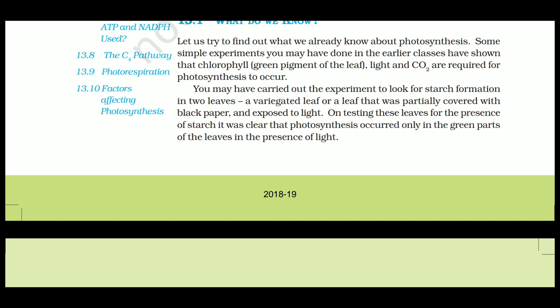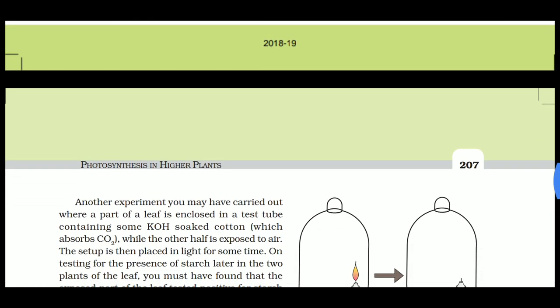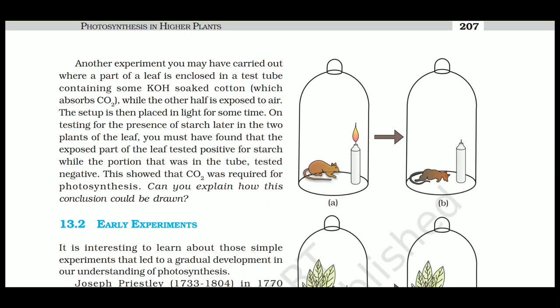In the variegated leaf experiment, the leaf has patches of green parts while the rest is covered by a yellowish or carotene region. Photosynthesis happens only in the green parts. Alternatively, you can take a normal leaf, cover half with black paper, and observe that photosynthesis occurs only in the uncovered part — confirming that the green chlorophyll part is responsible for photosynthesis. In this chapter, we'll see early experiments that confirmed that light, the green part, carbon dioxide intake, and oxygen release are all essential.